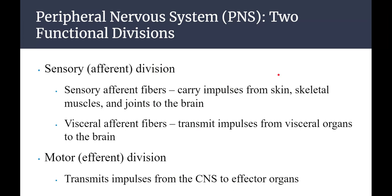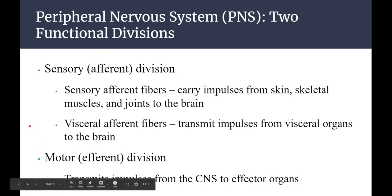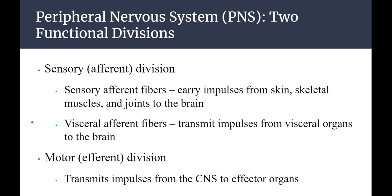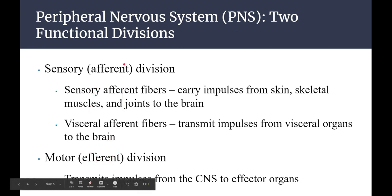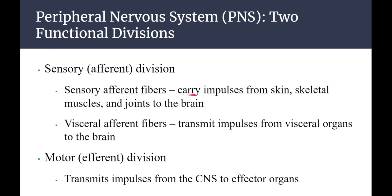In the peripheral nervous system you have two different divisions. You have the sensory division, called the afferent division, and the motor division, called the efferent division. The sensory afferent fibers carry impulses from the skin, skeletal muscles, and joints all the way up to the brain. The visceral afferent fibers transmit impulses from the visceral organs to the brain. Think afferent — it's coming at your brain, carrying information back from the body.